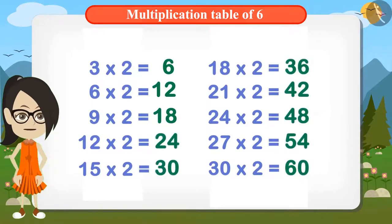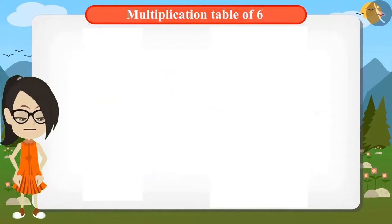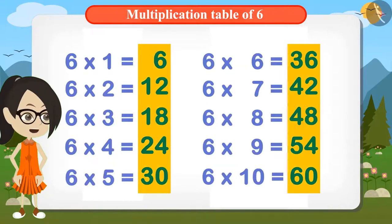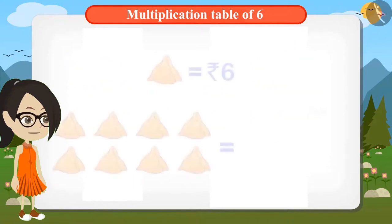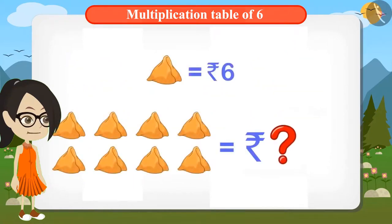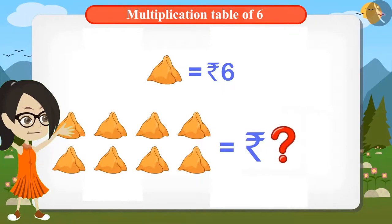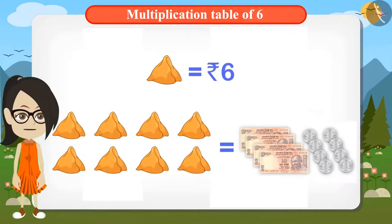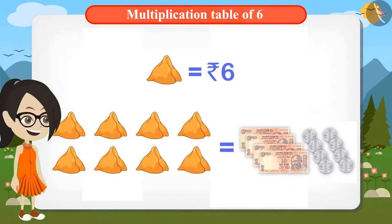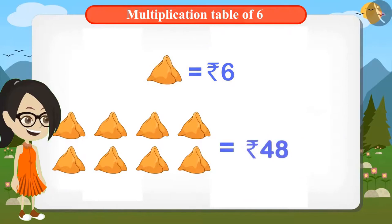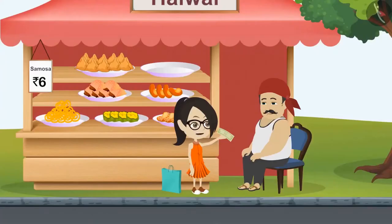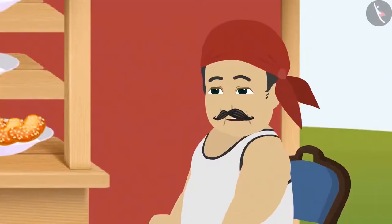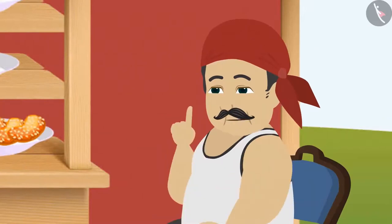You can also find out the multiplication table of 6 like this. We have already written down the table of 6. Now we can find out what is the cost of 8 samosas. That will be 6 times 8, which is 48 rupees. Now I will give 48 rupees to Chagu uncle. Vandana has figured out that 8 samosas will be 48 rupees at the rate of 6 rupees per samosa. Oh wow Vandana, you have calculated the amount correctly.